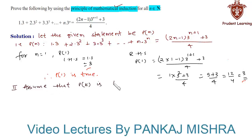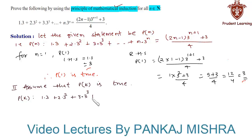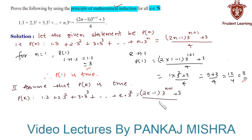That is, we have P(k) such that 1·3 + 2·3² + 3·3³ + ... + k·3^k equals (2k − 1)·3^(k+1) + 3, all divided by 4. Let us call this equation 1. In our final step — the generalization step — we will try to prove that P(k+1) is also true.